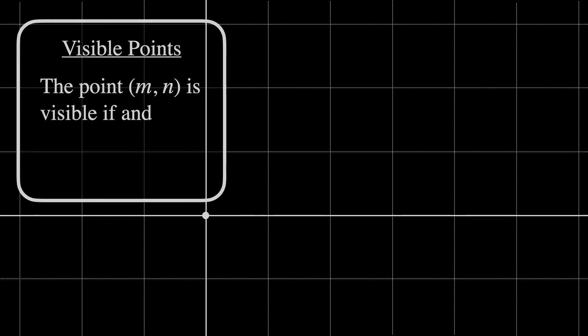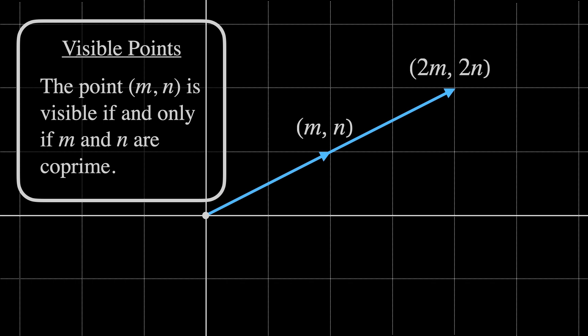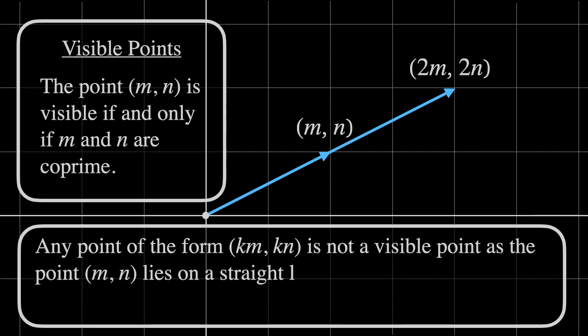The first step is recognizing that the point MN is visible if and only if M and N are co-prime. I'll explain what that means in a minute, but consider this in the meantime. If we have a visible point MN, it's easy to see that the point 2M2N isn't visible, since we've already gone through MN. And in general, any point of the form KMKN for some integer K is not a visible point, as the point MN lies on a straight line between the origin and KMKN.